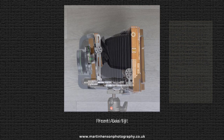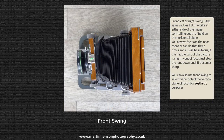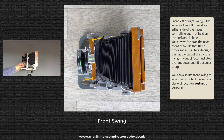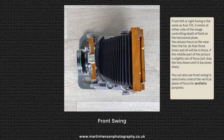This picture shows front swing, where the front standard is swung to one side. It's used for bringing into focus things that are not at the same angle as the camera — for instance, one plane going straight forward while your camera is at an angle to it. By swinging the lens, you can bring both near and far into focus. Here the standard is swung to the left, but it can be swung right too.